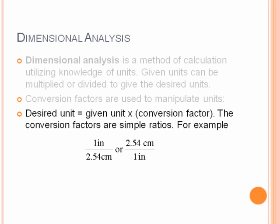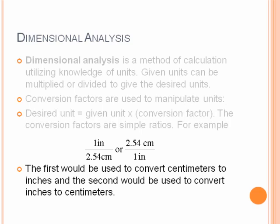For example, conversion between inches and centimeters. If I want to convert from centimeters to inches, I would say 1 inch divided by 2.54 centimeters. Or, if I want to convert from inches to centimeters, I would say 2.54 centimeters divided by 1 inch. So that first one would convert centimeters to inches, and the second would be used to convert inches to centimeters.